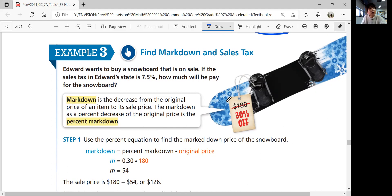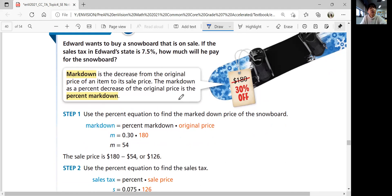Markdown is a decrease from the original price of an item to its sale price. The markdown as a percent decrease of the original price is the percent markdown. Step one, use the percent equation. Markdown equals percent markdown, 30% off, times original price. 180 times 30%, which is 0.3, is 54. You're going to subtract 54 from 180 because it's a markdown, not markup. 180 minus 54 is 126, and that is your sales price.